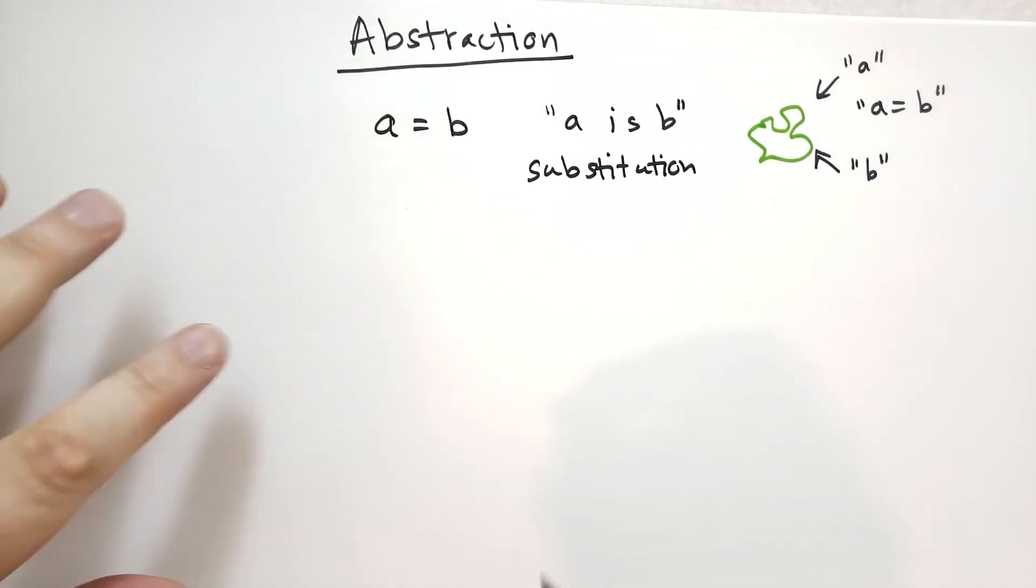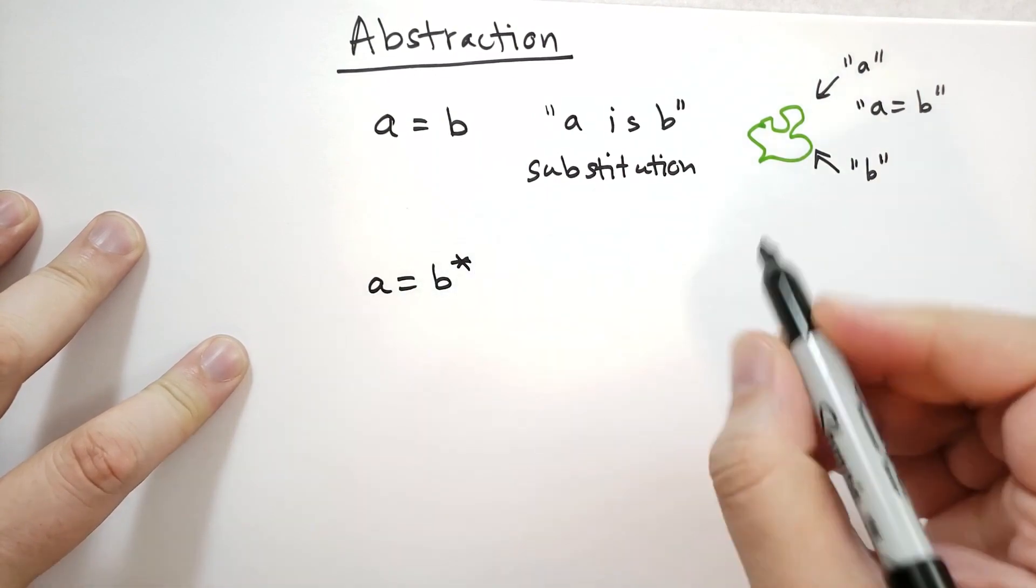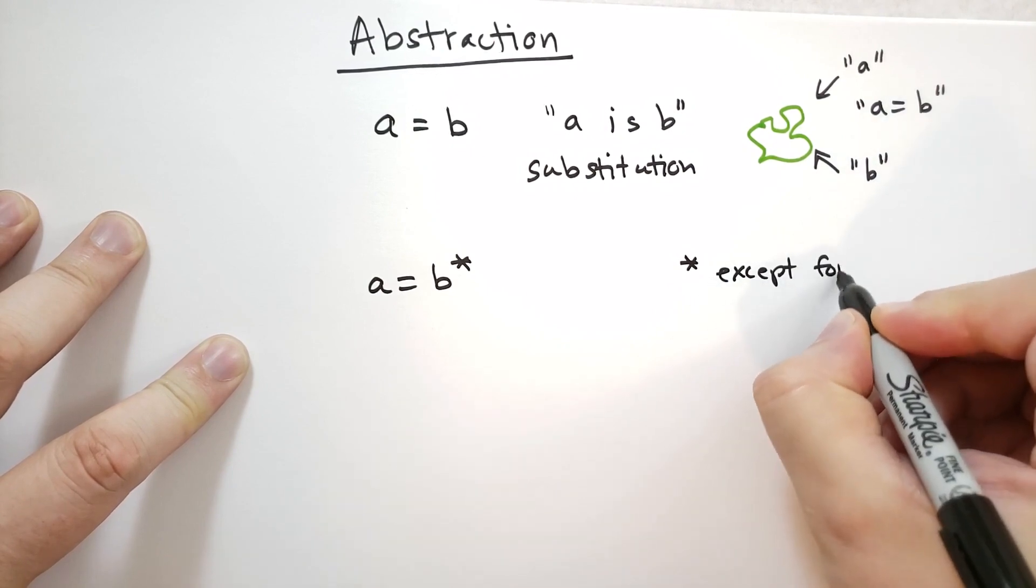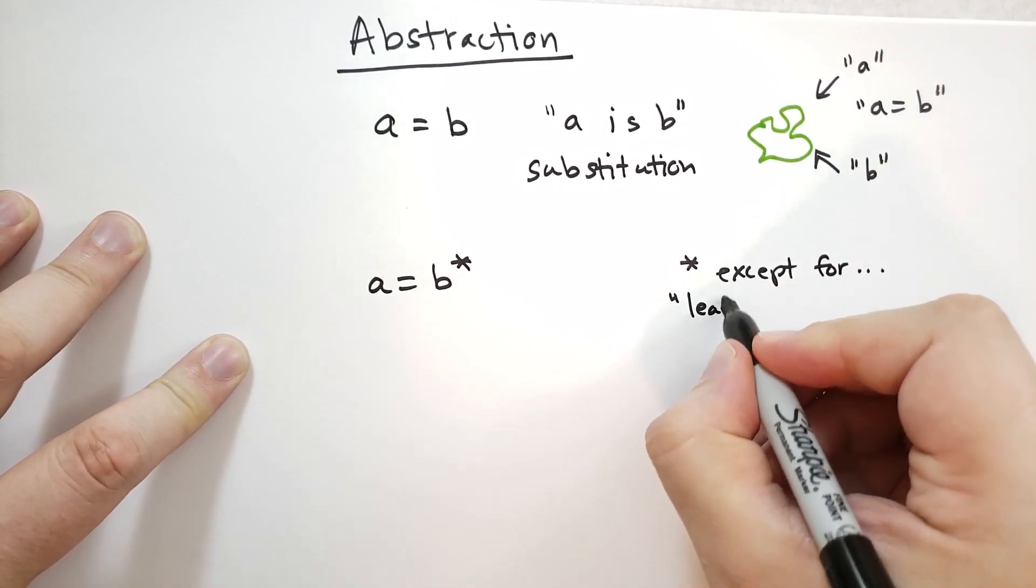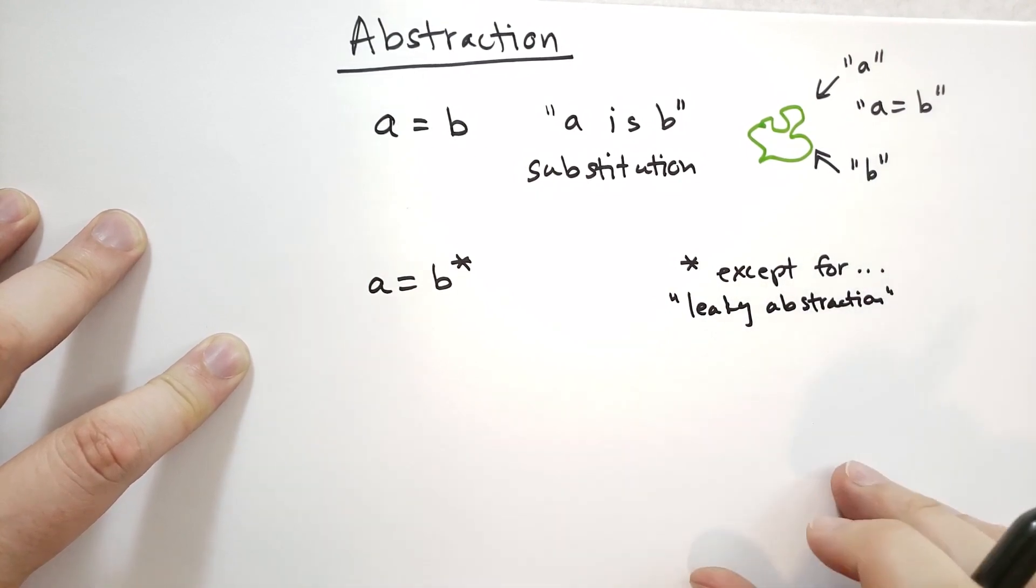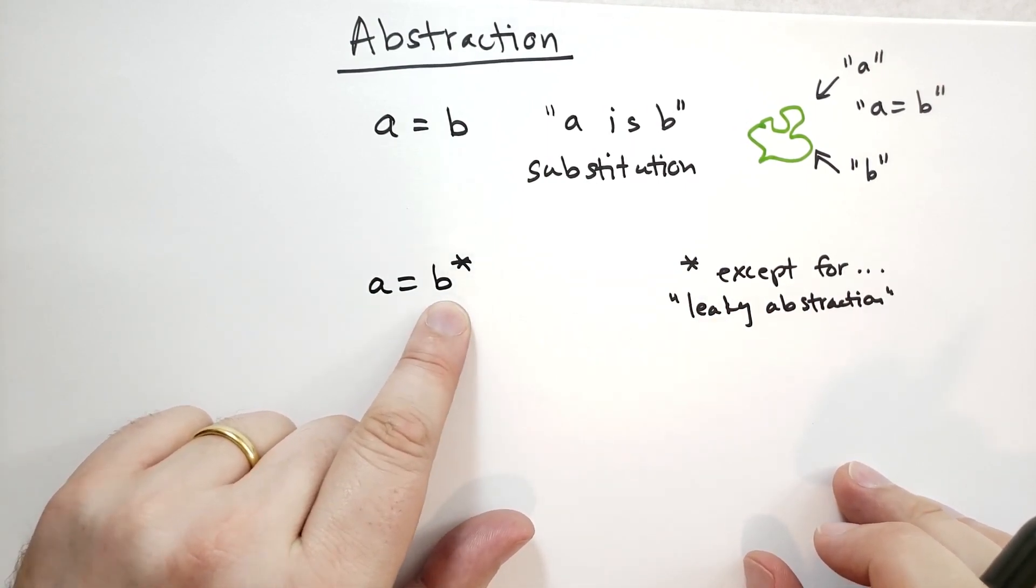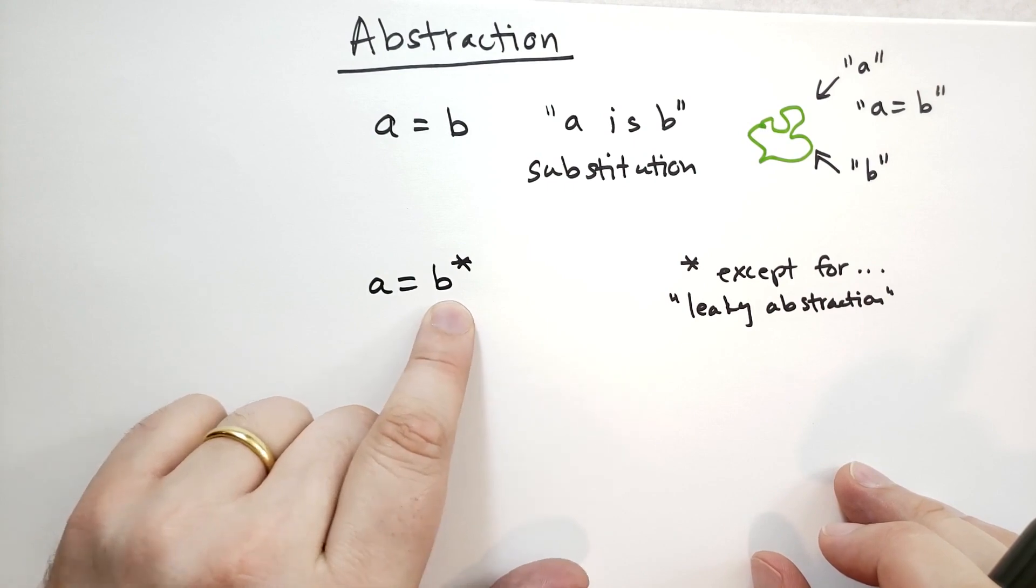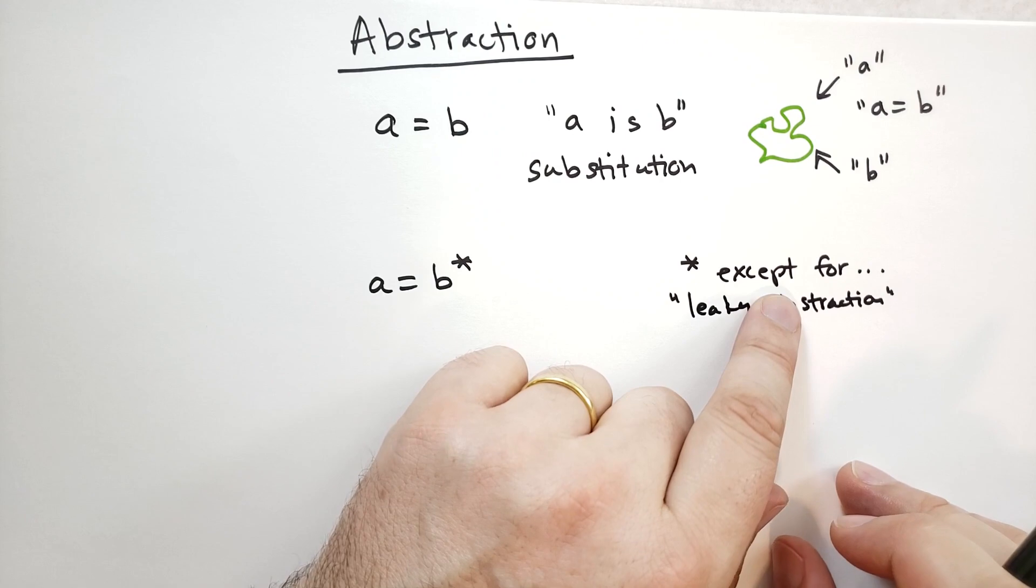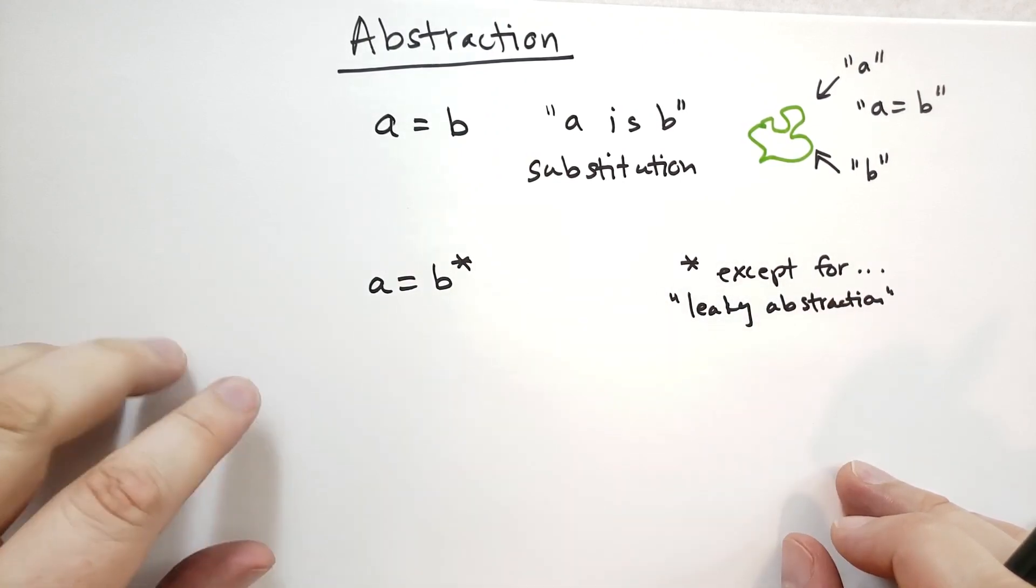Now, typically what you see is something like this. You'll see a is equal to b and there's an asterisk, and the asterisk says 'except for'. This is what I might call the leaky abstraction. There's caveats. It says it's not quite exactly the same as b, but it's pretty dang close. And I might say something like a is equal to b, except for some things that I'm not really interested in talking about right now. But hopefully somebody understands what those exceptions are.